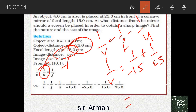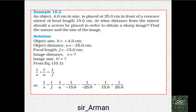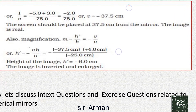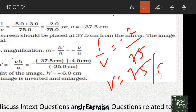Solving using the LCM method: the LCM of 15 and 25 is 75. So 1/v = (−5 + 3)/75, which gives 1/v = −2/75.